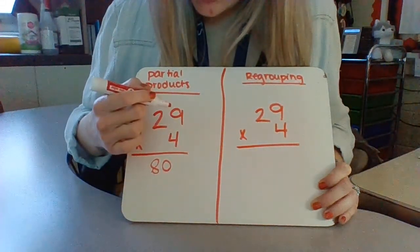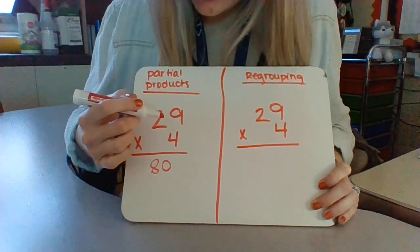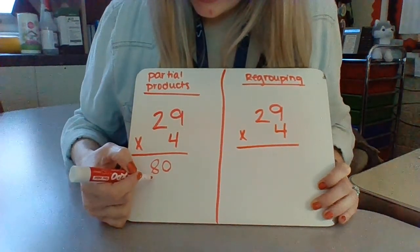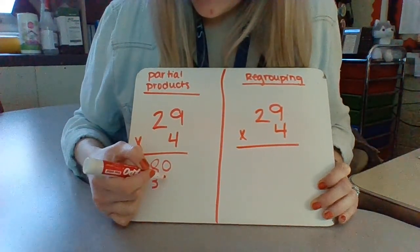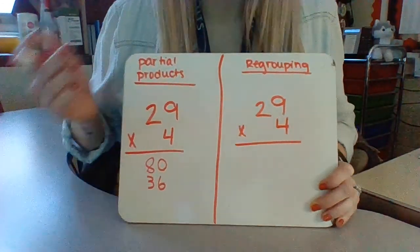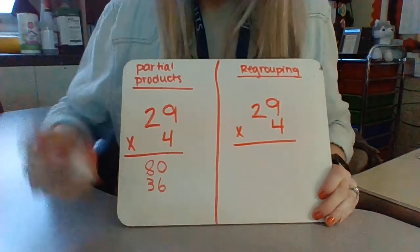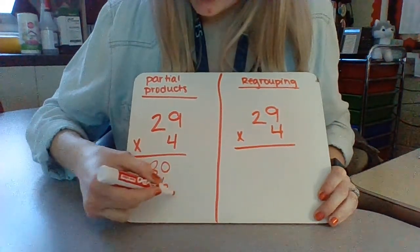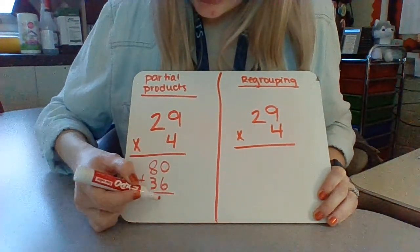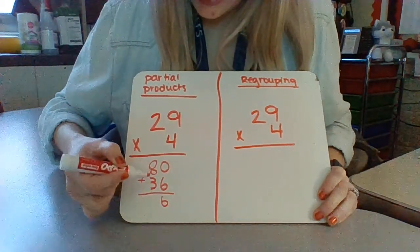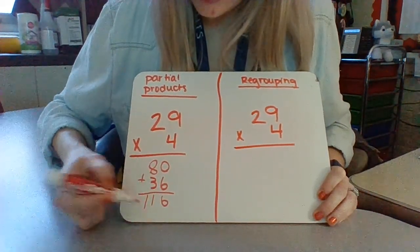4 times 9 is 36, and we don't need a 0 because we're already in the ones place. So now we add our partial products up: 0 plus 6 is 6, 8 plus 3 is 11.